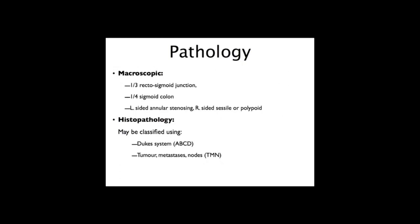In terms of pathology, macroscopically one third of tumours are found at the rectosigmoid junction and a quarter in the sigmoid colon, so often in the distal large bowel. On the left side they tend to be annular stenosing - ring-like tumours causing obstruction. On the right side there are sessile tumours, which are flat, or polypoid tumours, which have stalks.